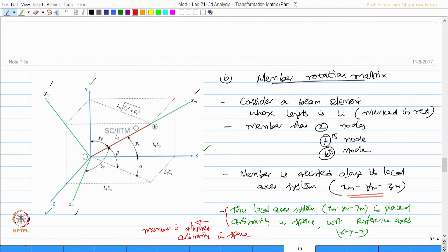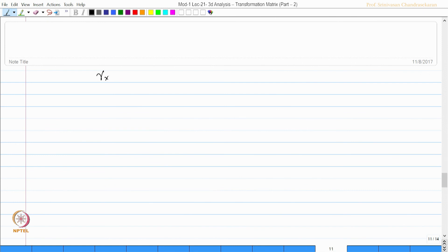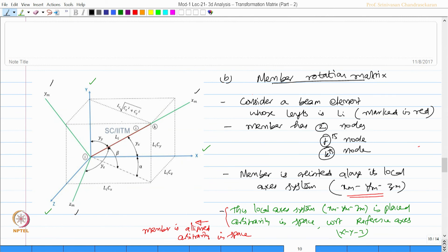So now, let us try to find out the angle of that axis system xm, ym, zm with reference to x, y, z frame. Gamma x, gamma y, gamma z are actually the angles of xm axis with respect to x, y, and z respectively. Xm axis with respect to x is gamma x, xm axis with respect to y is gamma y, xm axis with respect to z.